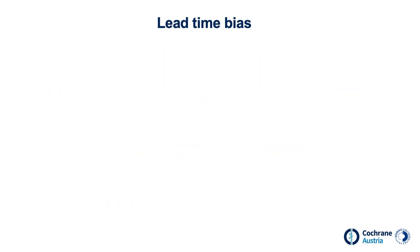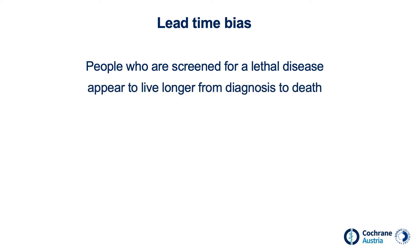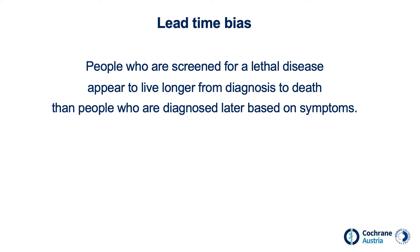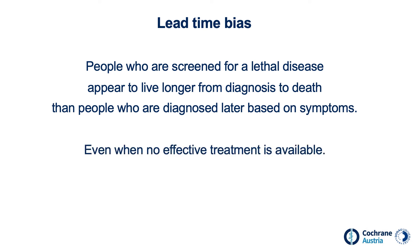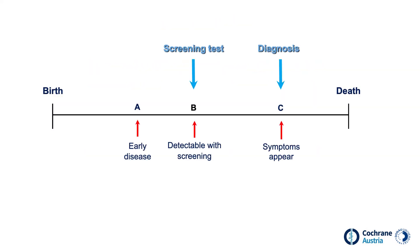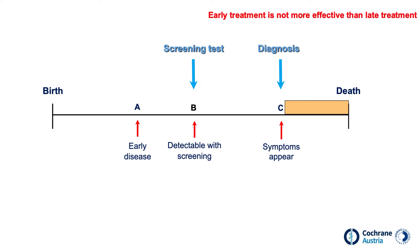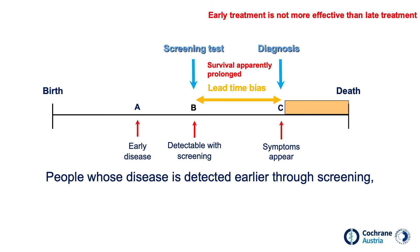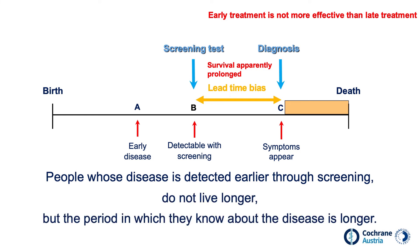So what is lead time bias? People who are screened for a lethal disease appear to live longer from diagnosis to death than people who are diagnosed later based on symptoms, even when no effective treatment for this disease is available. If we start measuring survival time at the time of diagnosis through early screening, then the patient seems to survive longer. If we start measuring later, when symptoms appear, the survival time seems shorter. If early treatment is not better than late treatment, then survival time is only apparently prolonged by early diagnosis. Lead time bias means that people whose disease is detected earlier through screening do not live longer — the period in which they know about their disease is longer.